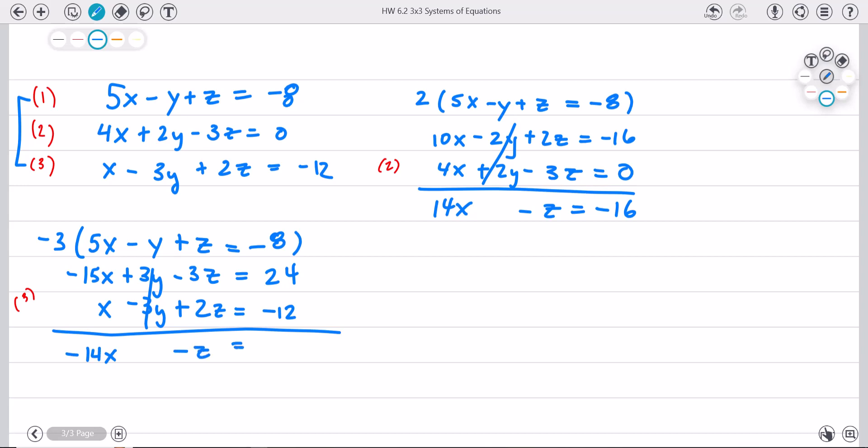And twenty four minus twelve is twelve. And so why this is important is because now that I have these two equations without a y, I could actually do something with these two equations, or one of them, I should say.